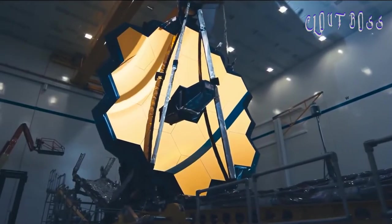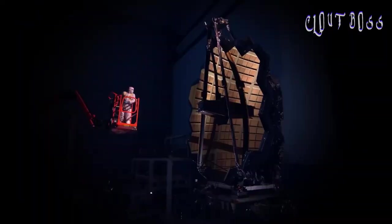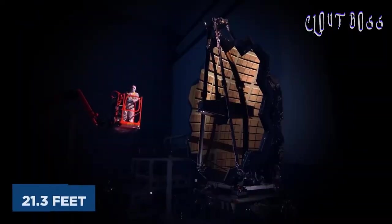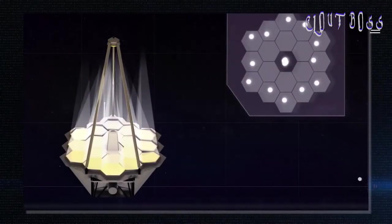JWST, however, surpasses that with its beautiful gold-hued mirrors that combined form a diameter of 21.3 feet. Overall, that gives the JWST more than six times the light-collecting area of the Hubble.